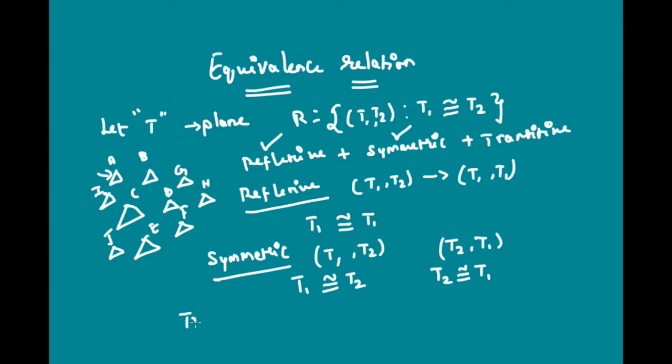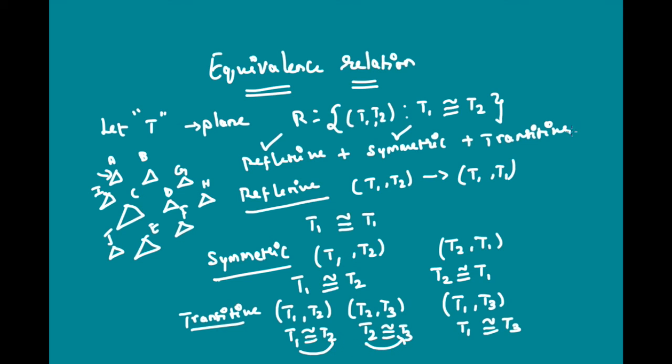The next check is on transitive. If we assume T1 and T2 are congruent or satisfy the relation R, and simultaneously T2 and T3 also satisfy relation R, then we need to prove T1 and T3 also satisfy relation R. Now if T1 and T2 satisfy relation R, then T1 is congruent to T2, and in this case T2 is congruent to T3. Then definitely T1 is congruent to T3 because T1 is congruent to T2, which in turn is congruent to T3. Thus it is transitive as well.